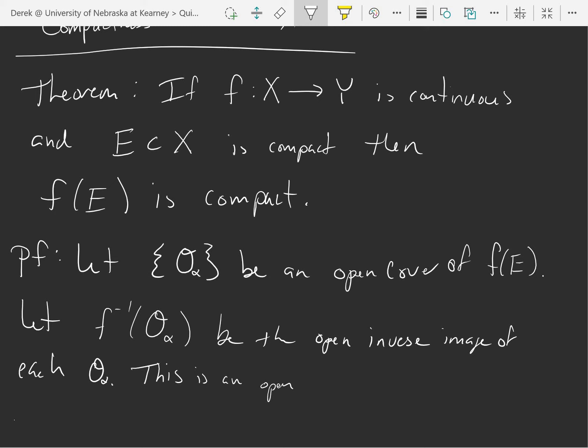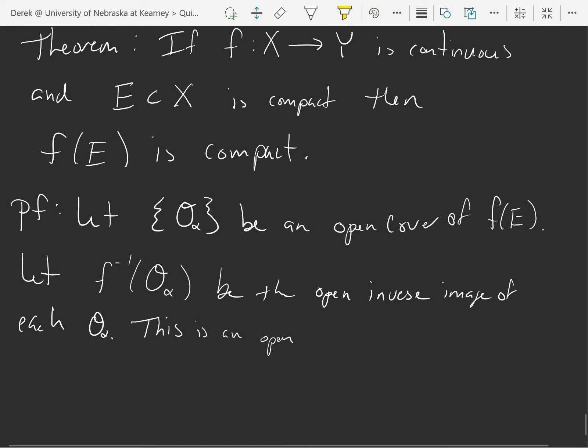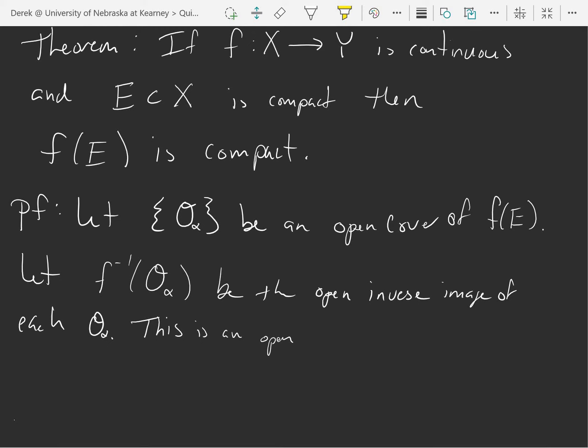Obviously each of them are open because f is continuous, right? The inverse image of a continuous function, if we have a continuous function, the inverse image of an open set is open. So these are all open, and it's a cover too. Why is it a cover? Well, the O alphas cover the image of E. So to get into the image of E, if I look at everything that sends me to the image of E, E has to send me to the image of E. So if you just kind of do some arguments with elements, pick an element in E, show that it has to be in one of these f inverse O sub alphas. That would be a good exercise if you don't see this right away.